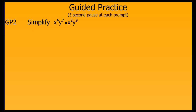Let's try another one. Again, we're simplifying an expression involving exponents. This time we have two variables, so we're going to group our like variables together. Then we use our property to add the exponents for x — four plus two — and then for y — seven plus nine — to get our simplified form of x to the sixth, y to the sixteenth.